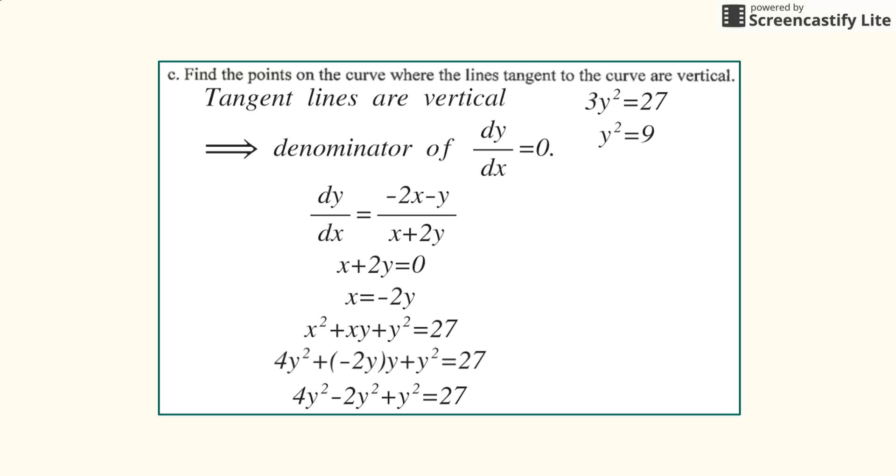Divide by 3 and then square root, so it's plus or minus 3. Then you plug in those values into the x equals negative 2y.